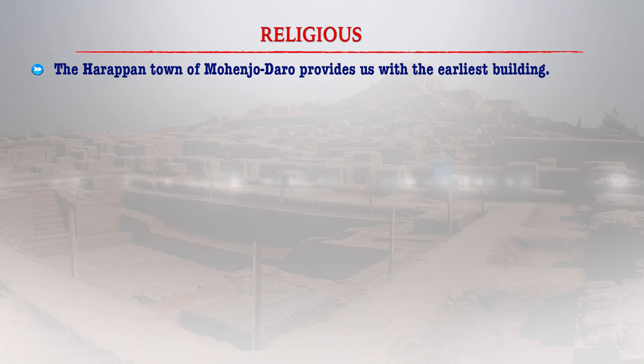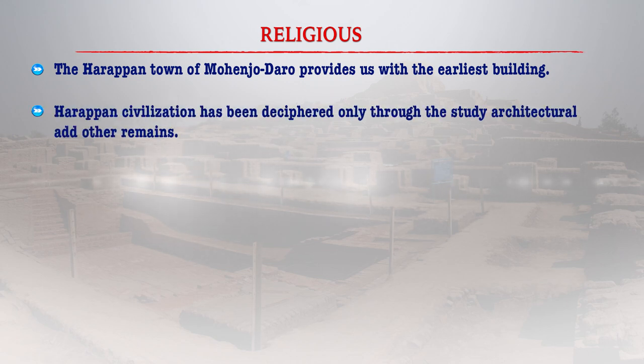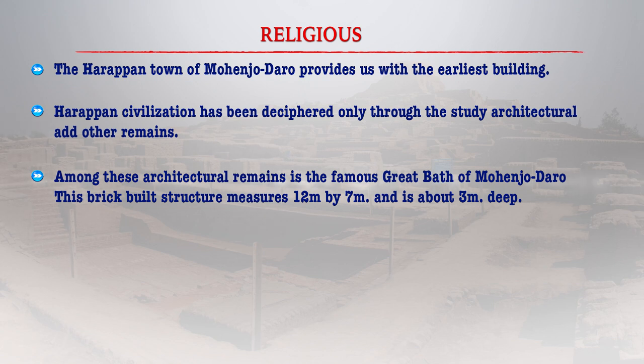The Harappan town of Mohenjodaro provides us specimens of the earliest buildings. The Harappan civilization was deciphered through the study of architecture and its remains. The famous Great Bath of Mohenjodaro is a brick-built structure approachable through steps. The bed of the bath was made of watertight material. Water was supplied by a large well in an adjacent room and there was a good drainage system as part of the entire structure. Generally, this place was used for ritual bathing of kings or priests and appears to have been part of the ritual life of the entire society.